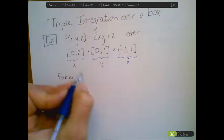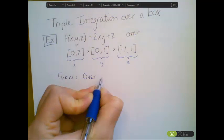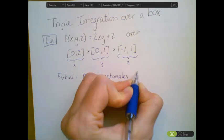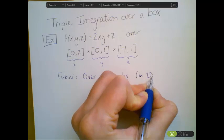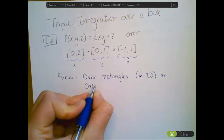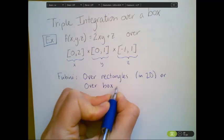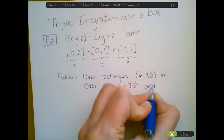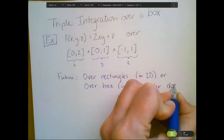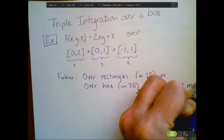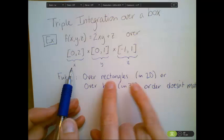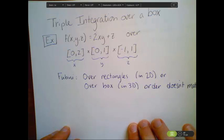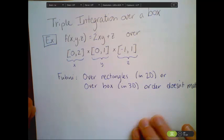And what Fubini's theorem tells us, when I'm integrating over rectangles in 2D or over boxes in 3D, that the order doesn't really matter. I can interchange the order of integration, and as long as I have my outer bounds matching my dx, dy, dz bounds, I can integrate in whatever order I want.